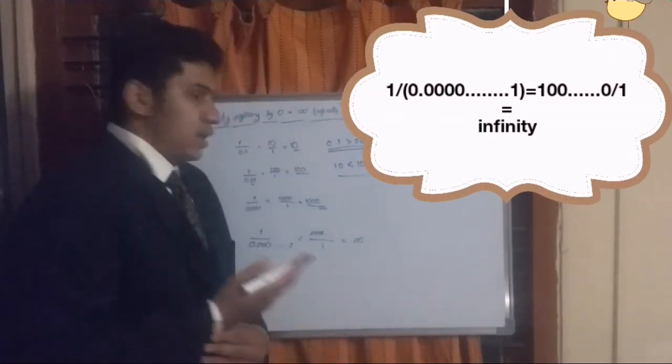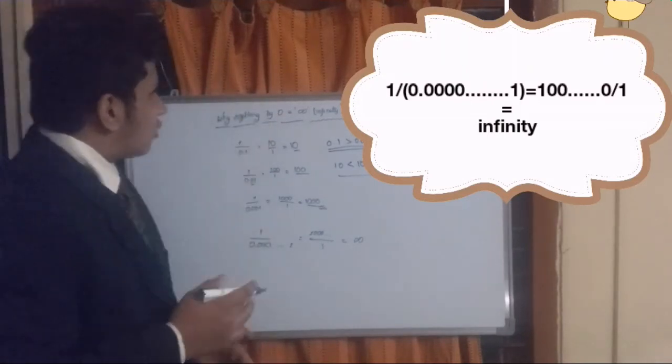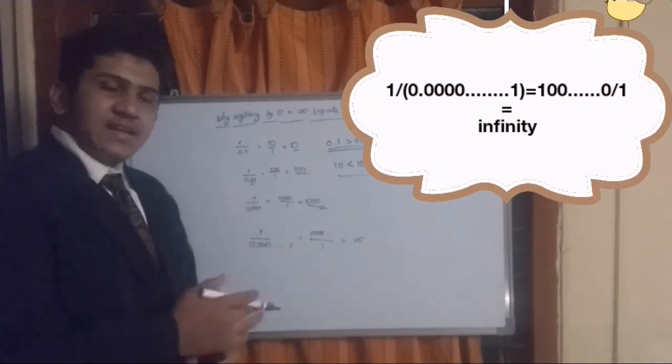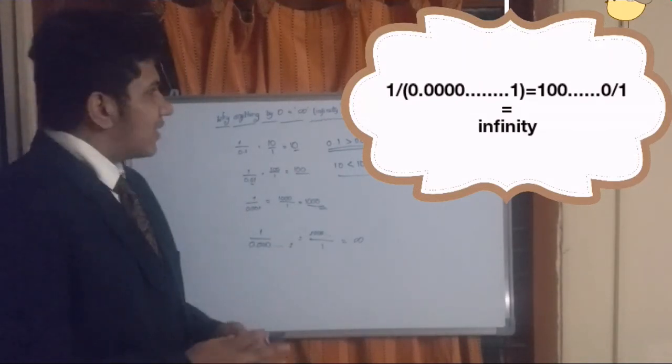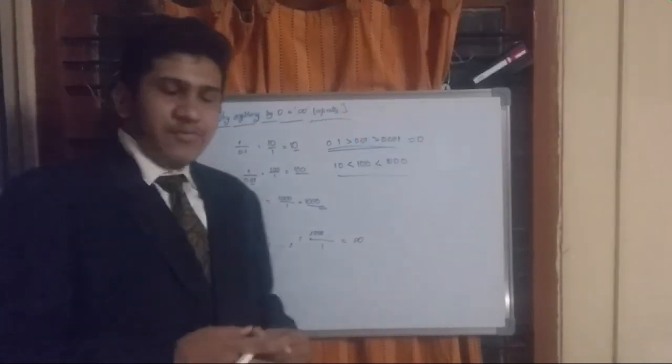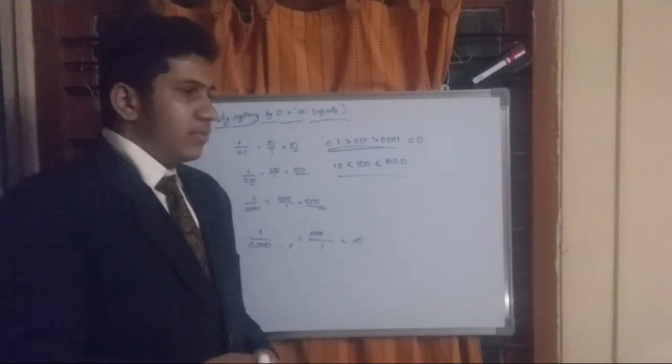This is the simple reason why we write anything divided by zero equals infinity. Because as we are increasing the number of zeros, it's getting closer to zero. So no problem here, because this is a very small error and we can just neglect it.